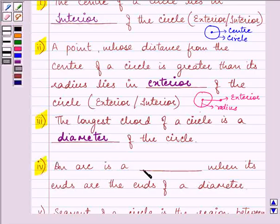An arc is a blank when its ends are the ends of the diameter. So this is a diameter. So an arc is what when its ends lie at the ends of the diameter.